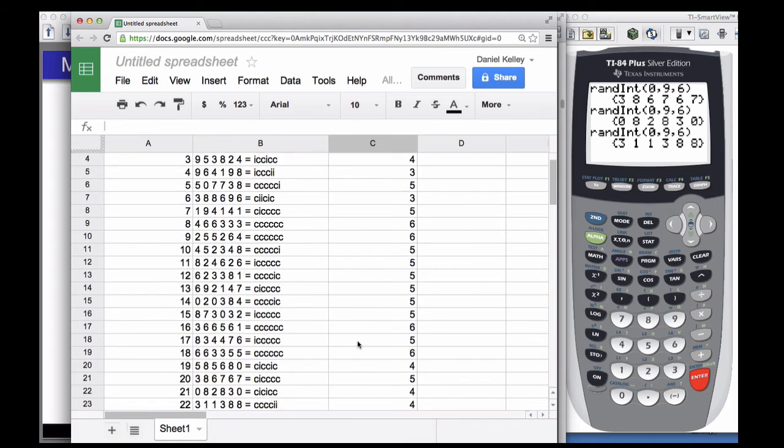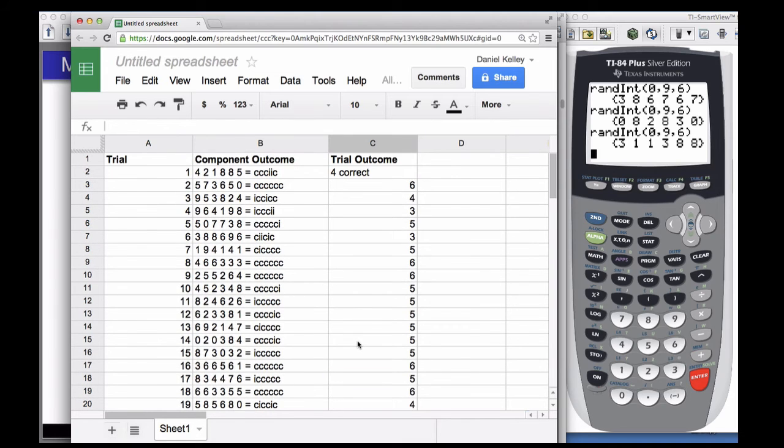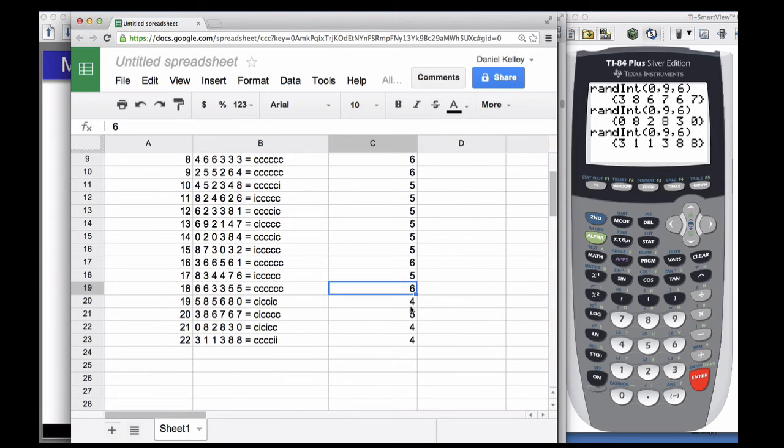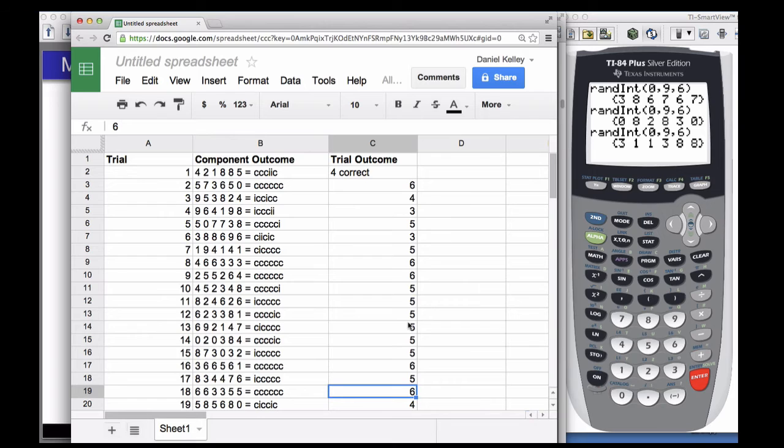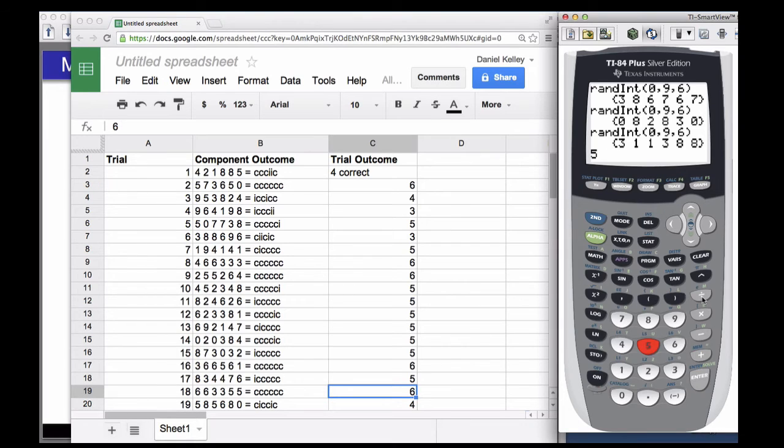All right, now out of all 22 trials that I did, I had 5 out of 22 perfect scores on the test. So that means my simulation suggests that I have about a 22.7% chance of acing this test given the original parameters of this problem here, that I have an 80% chance of getting any individual question right.